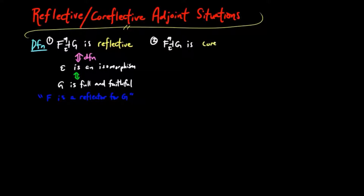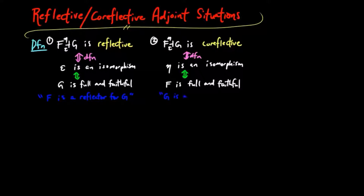Dually, FG is co-reflective if and only if the unit is an isomorphism, if and only if F is full and faithful. And we say G is a co-reflector for F.